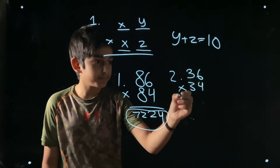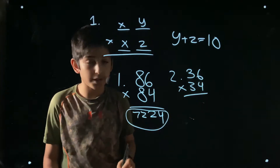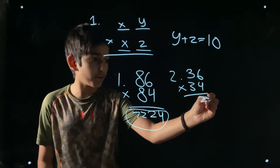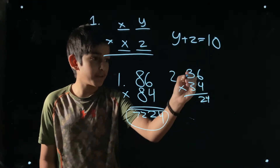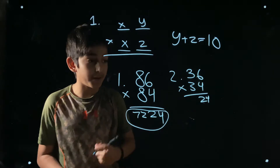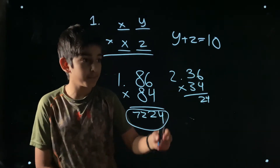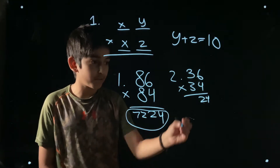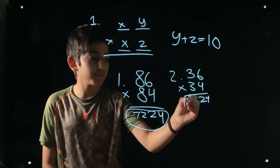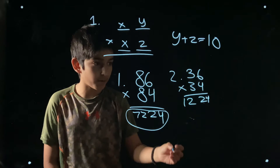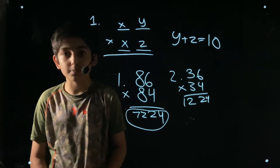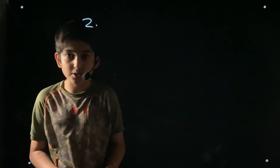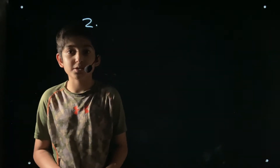Another example: 36 multiplied by 34. Multiply the last digits — 6 times 4 is 24. Then multiply the tens digit by the next following number: 3 times 4 is 12. So the answer is 1224. Now let's move on to our second multiplication trick.